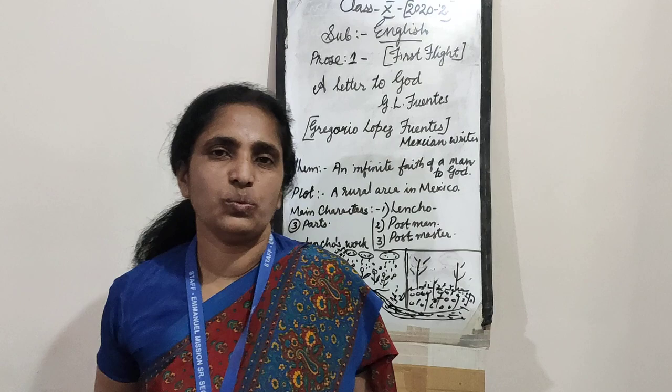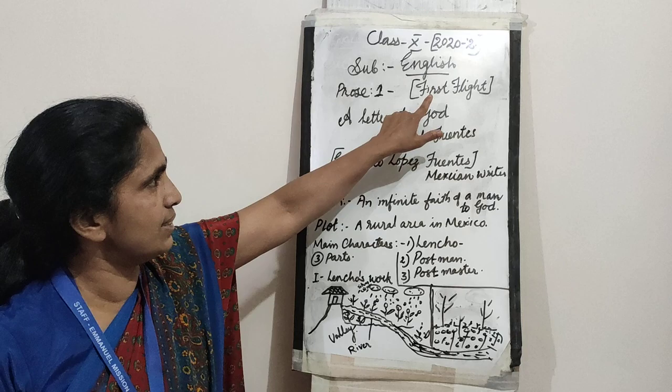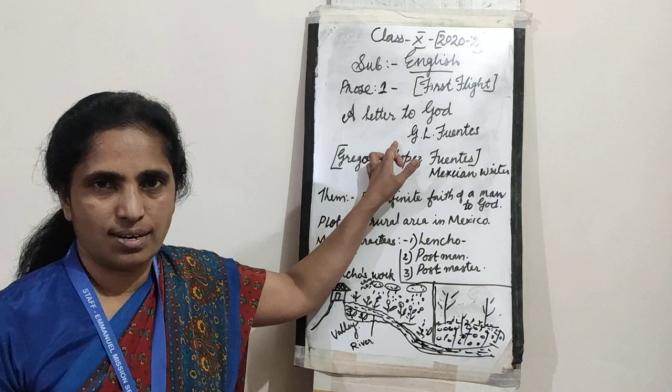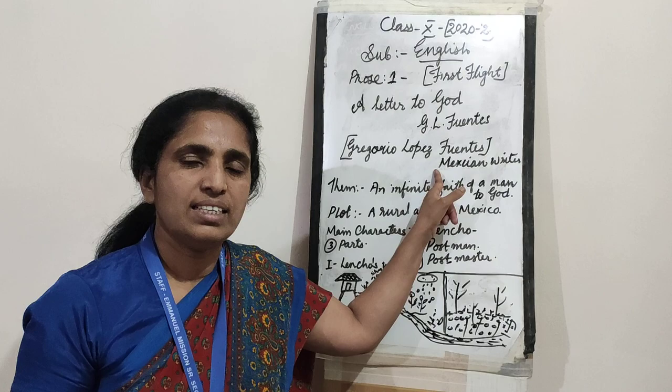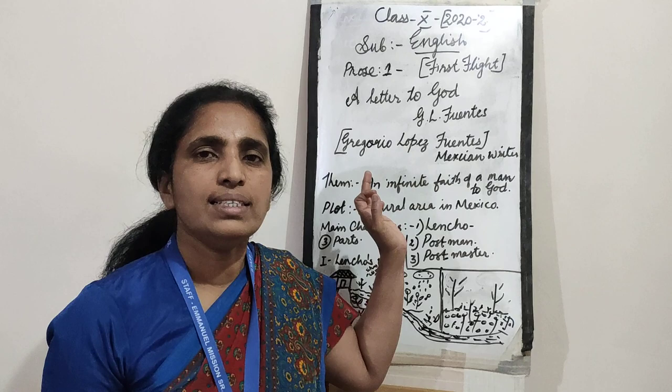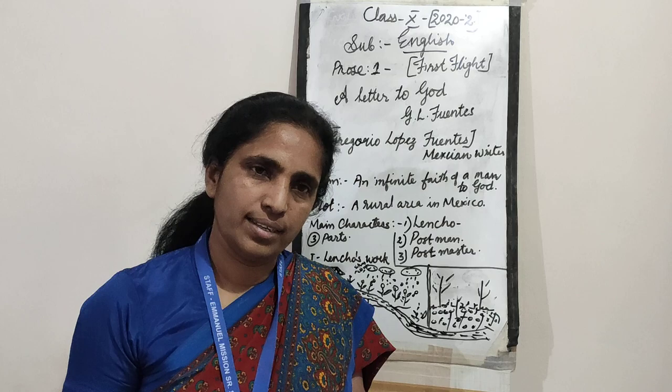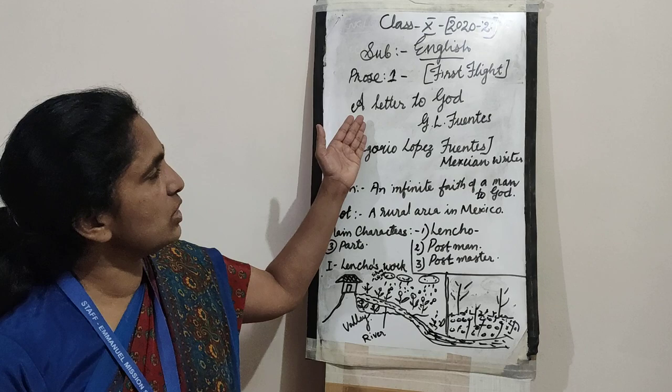Now, let us come to the first lesson from First Flight. The first lesson, or prose one in unit one of First Flight, is 'A Letter to God.' It is written by G.L. Fuentes, or Gregorius Lopez Fuentes. He was a Mexican writer who used to write poetry, prose and journals in the Mexican language, which was later translated into English. Similarly, this 'Letter to God' was also written in Mexican language and later translated into English.